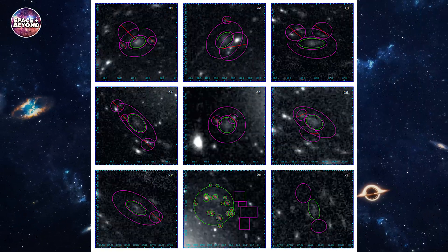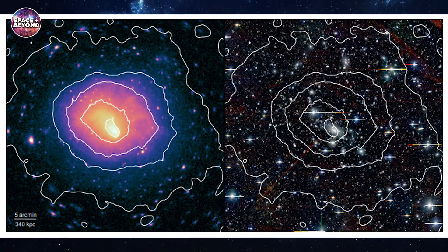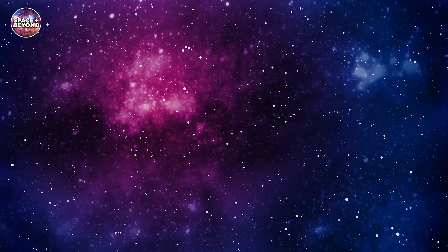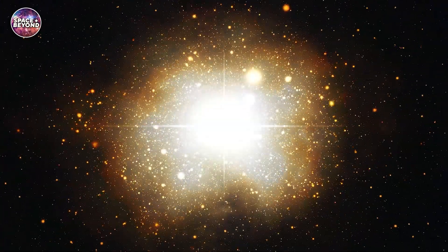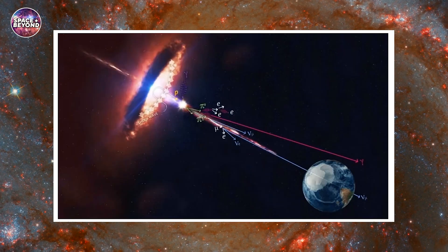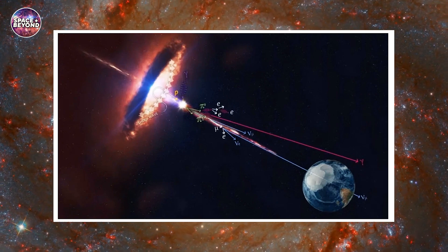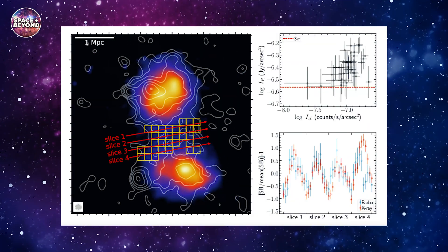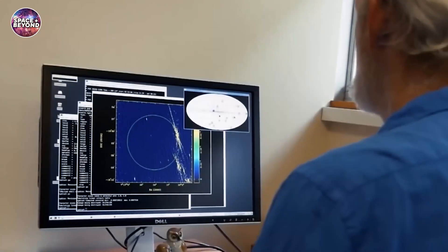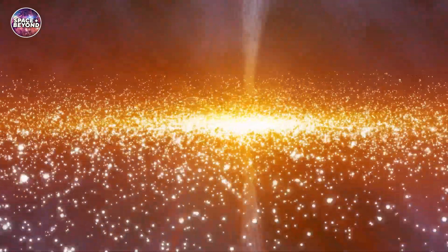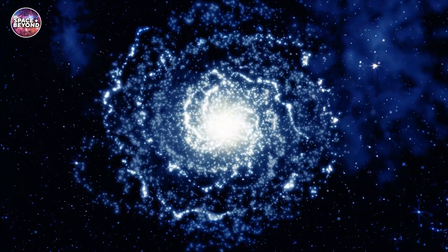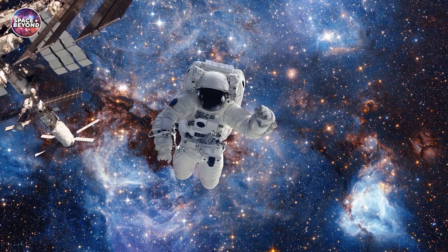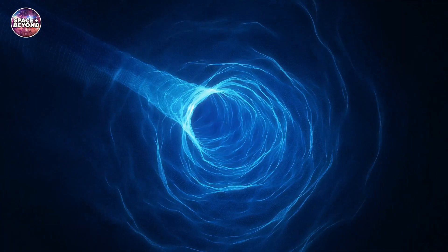The 570 KPC radio relic in Abel 3266 is a fascinating feature of this cluster. It emits radio waves that are different from the usual emission expected from particles present in clusters like this one, indicating that something unusual has happened to cause it. It's possible that the relic could have formed due to an energy injection from an AGN or shockwave associated with a merger within the cluster. We also detected a bridge connecting the relic to the core of the cluster, which may indicate that we're seeing evidence of past merging activity between two separate components. This suggests that mergers and energy input play an important role in shaping galaxy clusters over time and helps us better understand how these objects evolve. Further observation and study will be necessary to determine the exact source of the relic and to understand how this bridge was formed.